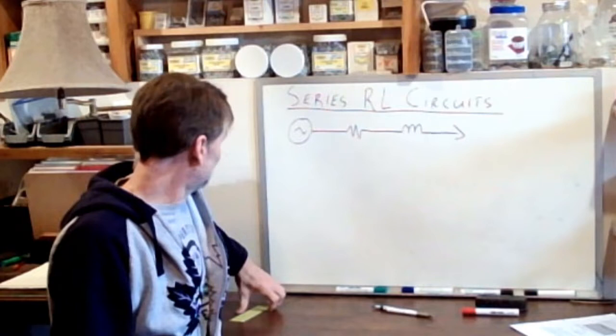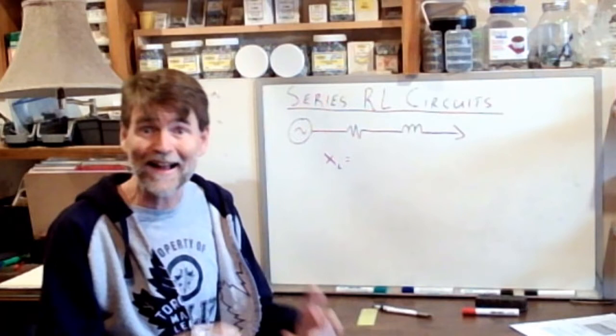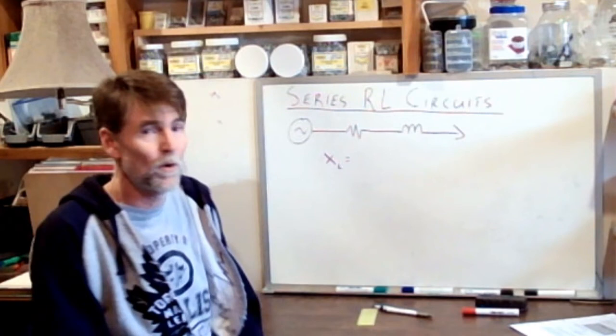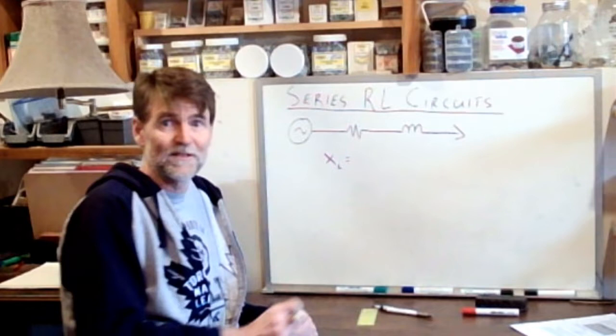The first point that I want to make here is that the inductor will offer some reactance in our circuit, which is essentially the equivalent of resistance. We note it with an X because it's not resistance, it is reactance, subscript L because it's reactance as a result of the inductor. And how do we calculate the reactance in a circuit?